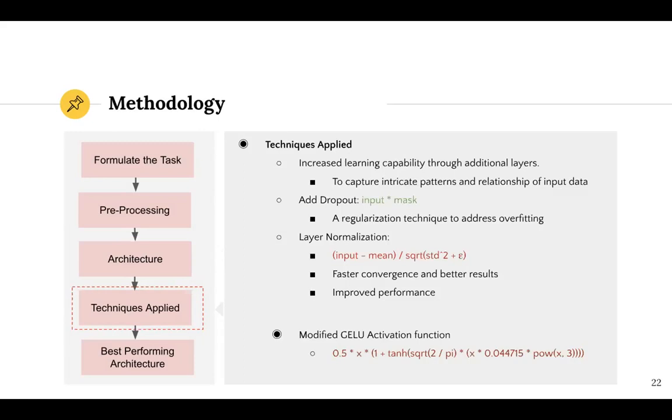Firstly, the number of encoder layers has been increased to enhance the model's learning capability and enable it to capture intricate patterns and relationships within the input data. The additional layers allow the model to capture information at different levels of granularity, from local and syntactic to abstract and semantic concepts.